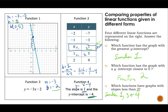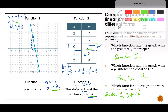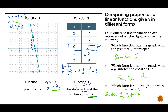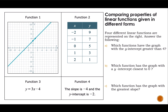Let's do a couple more examples. I'm going to give four new functions. I'll start by labeling my slopes and y-intercepts, because that's what they're asking about. This function has a slope of one — I go up one, over one, up one, over one — so its slope is one. It has a y-intercept of three.